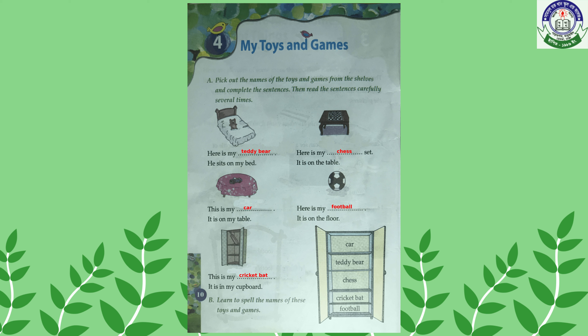The next picture is a football. Here is my football; it is on the floor. And the last picture is a cricket bat, so this is my cricket bat; it is in my cupboard.